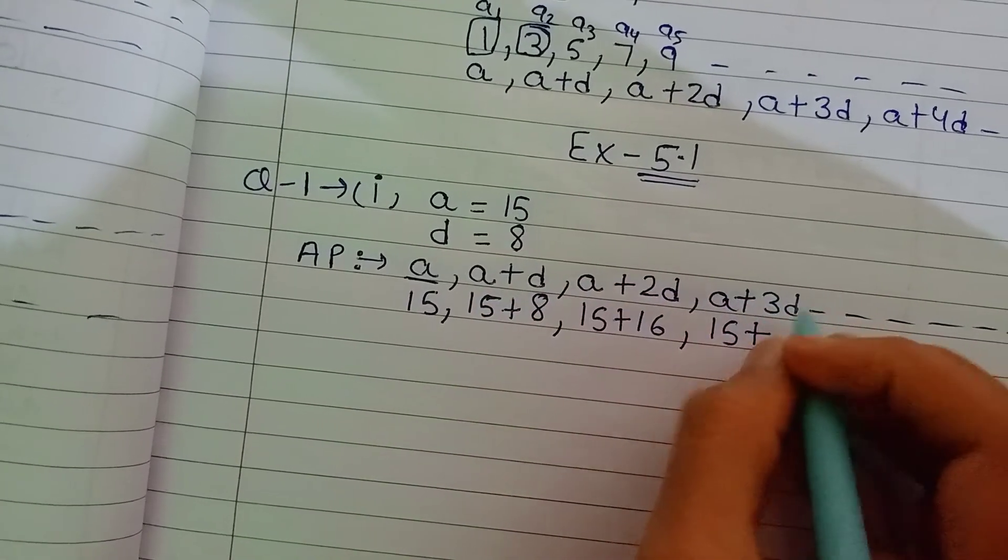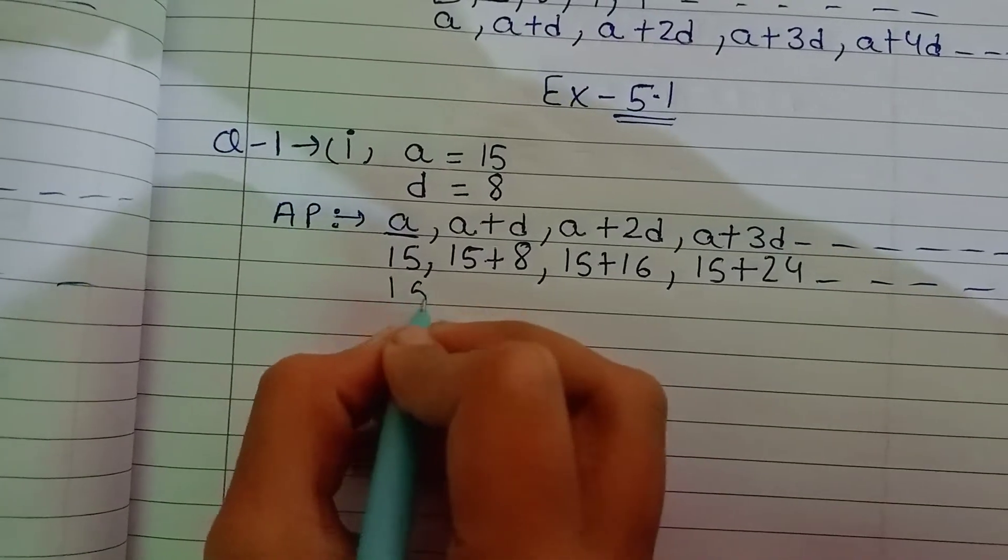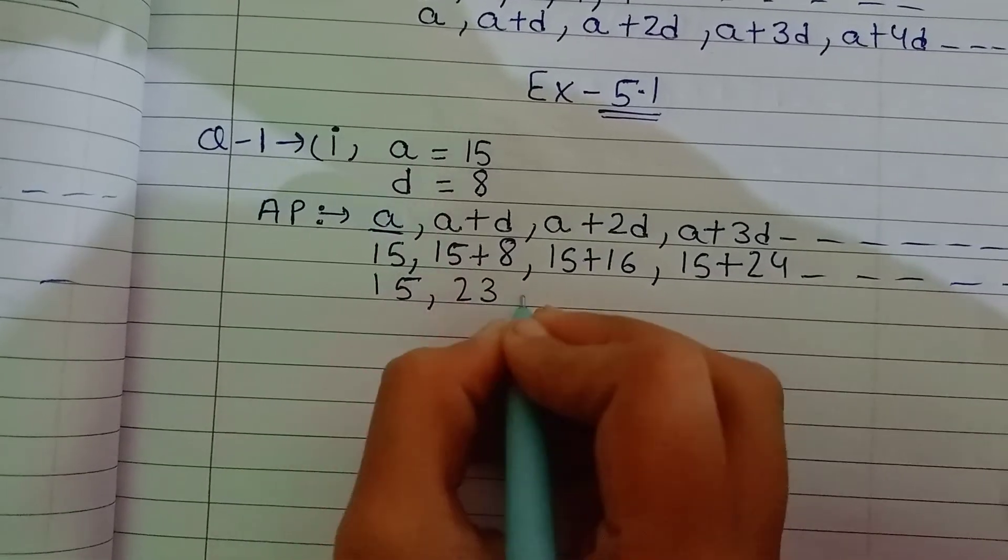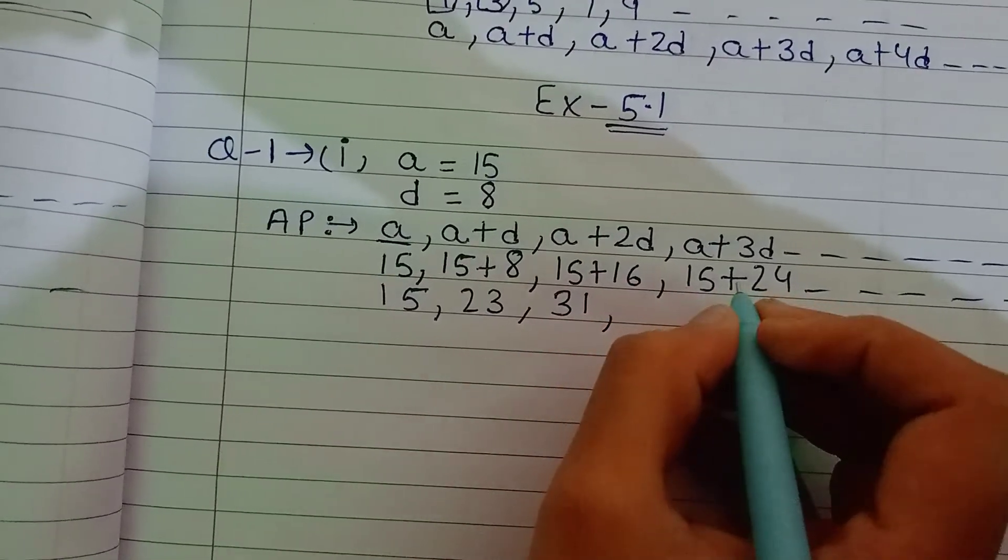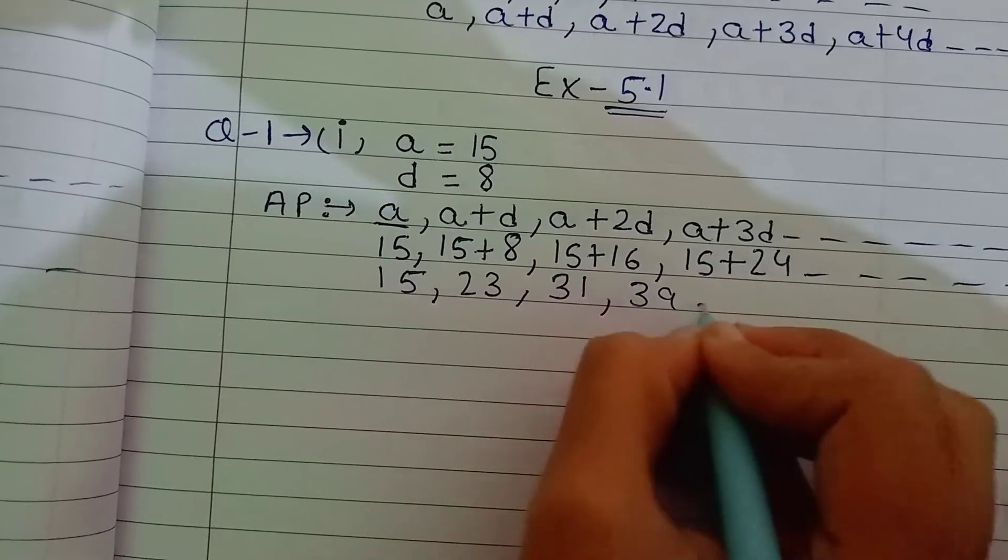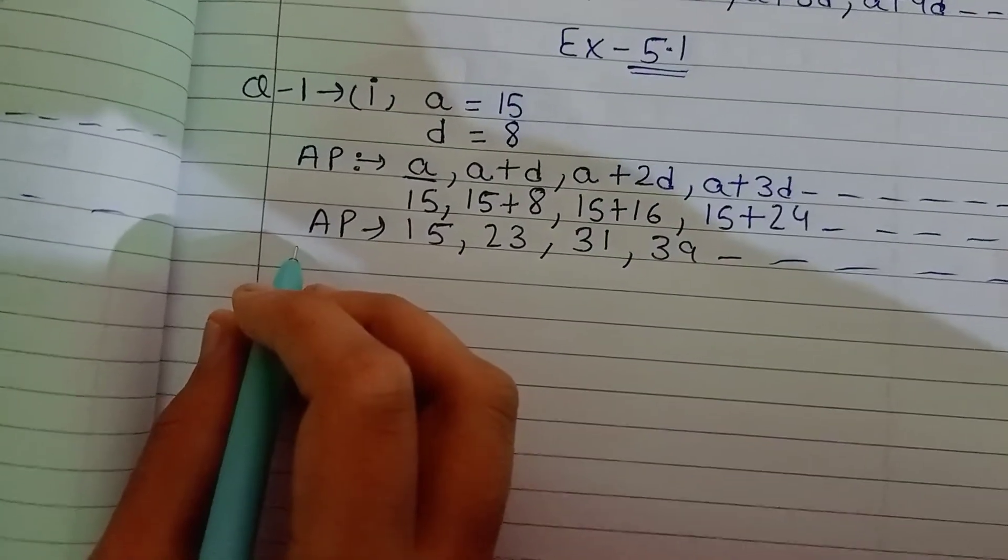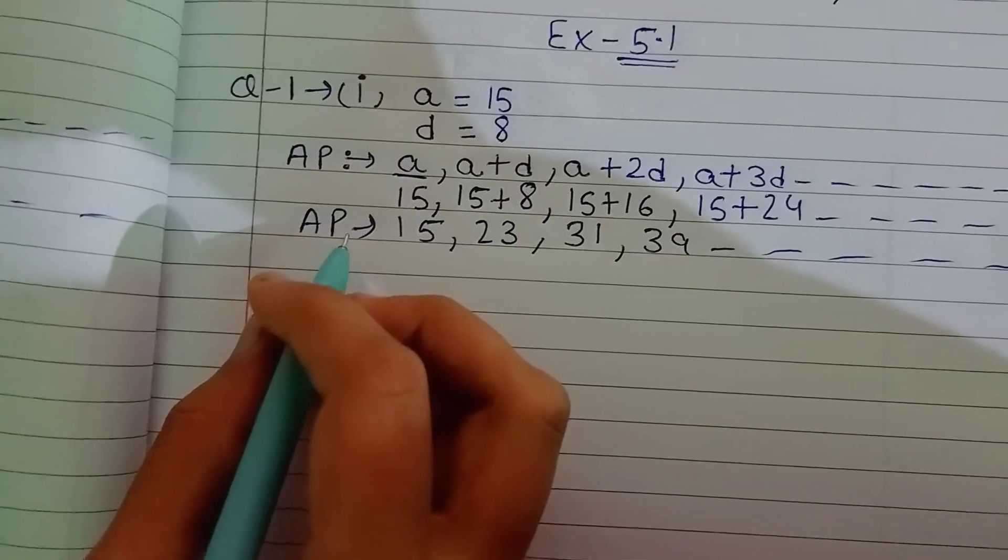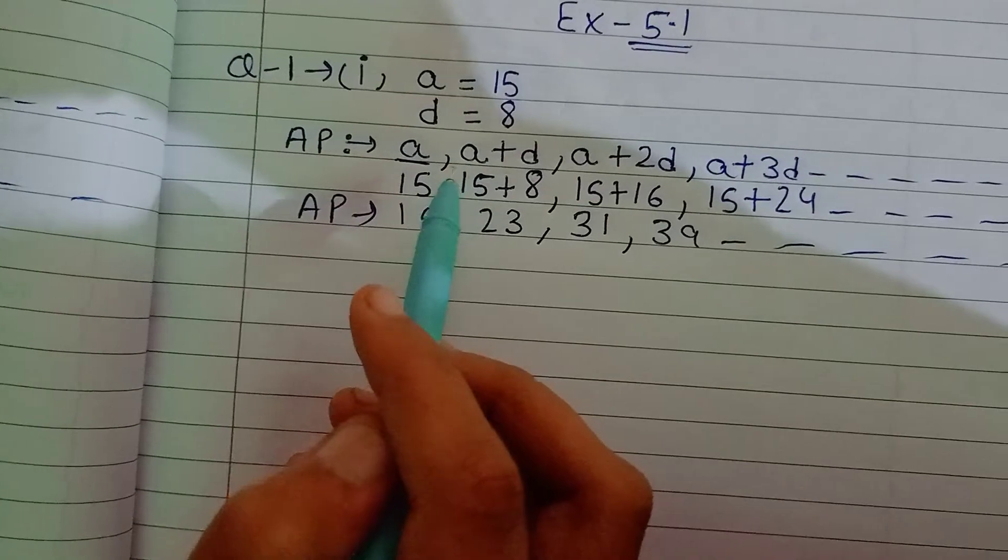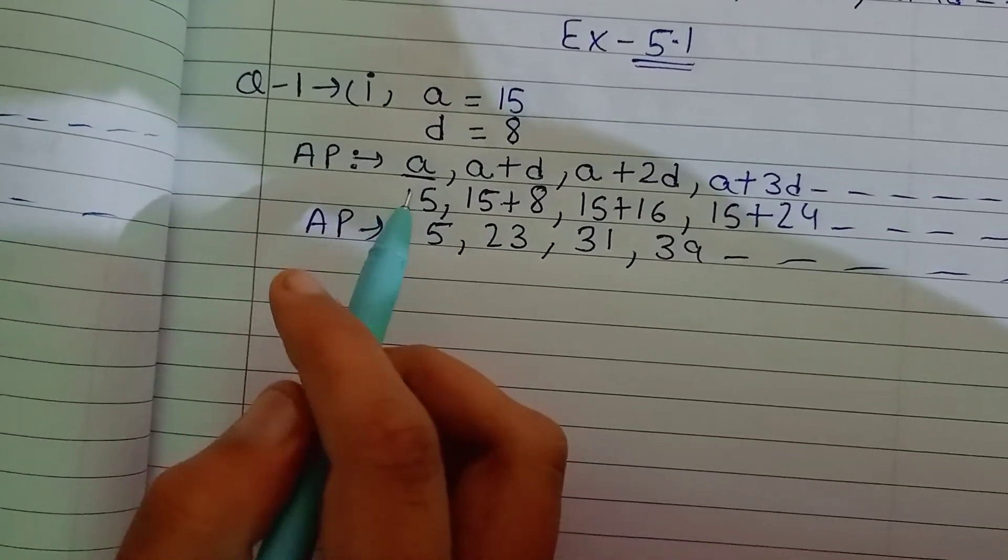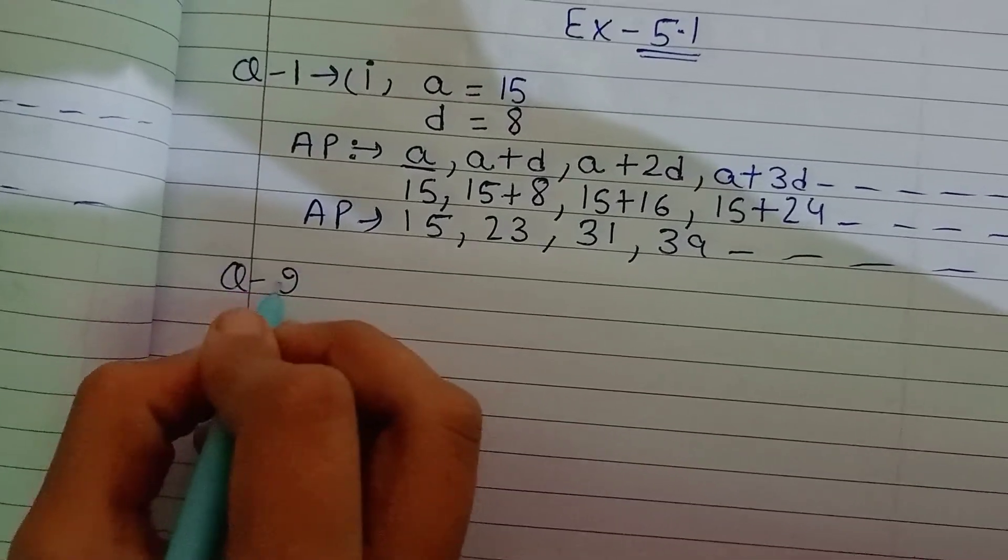So we do the math. 15 and 8 is 23, 15 and 16 is 31, 15 and 24 is 39. So this is our first question, this is our first part. This is our first question. The rest of the parts are easy. I hope that you will understand, so you can do the rest of the parts. If you have any doubt, then you can ask us in the comment box.